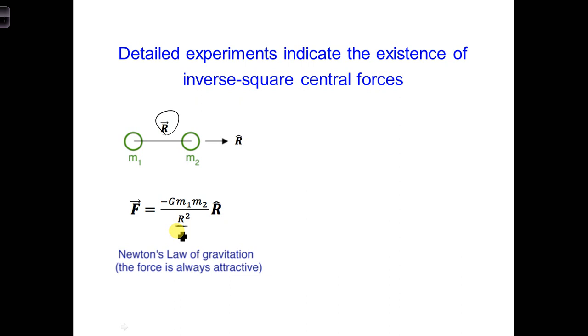So in this equation, M1 is the mass of object 1, M2 is the mass of object 2, R is the distance between the two objects.